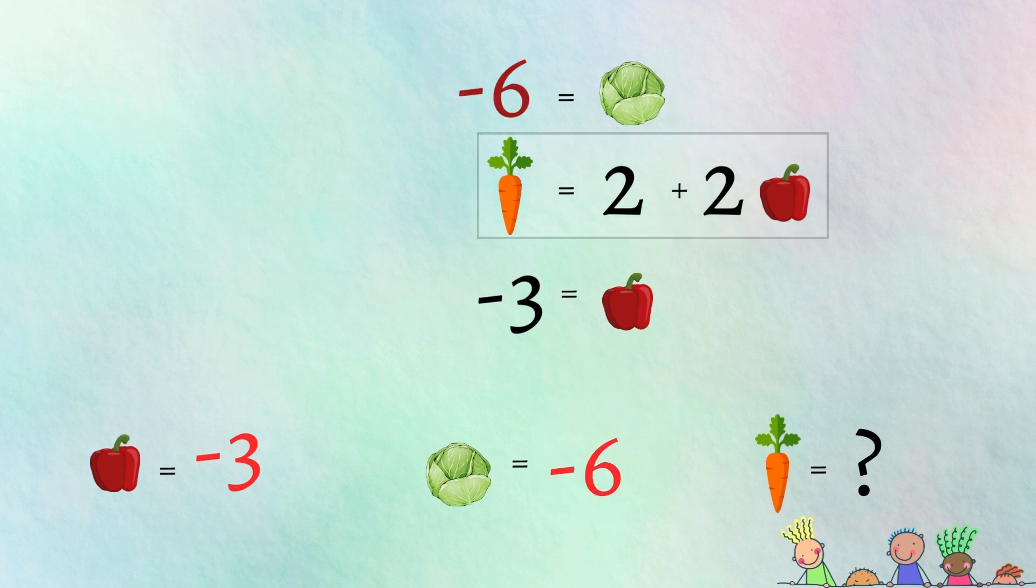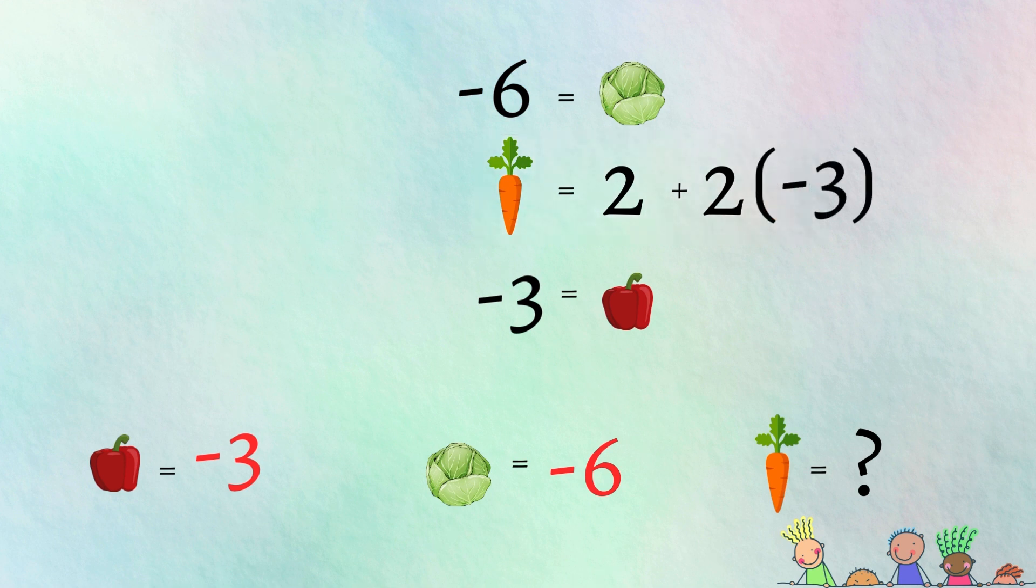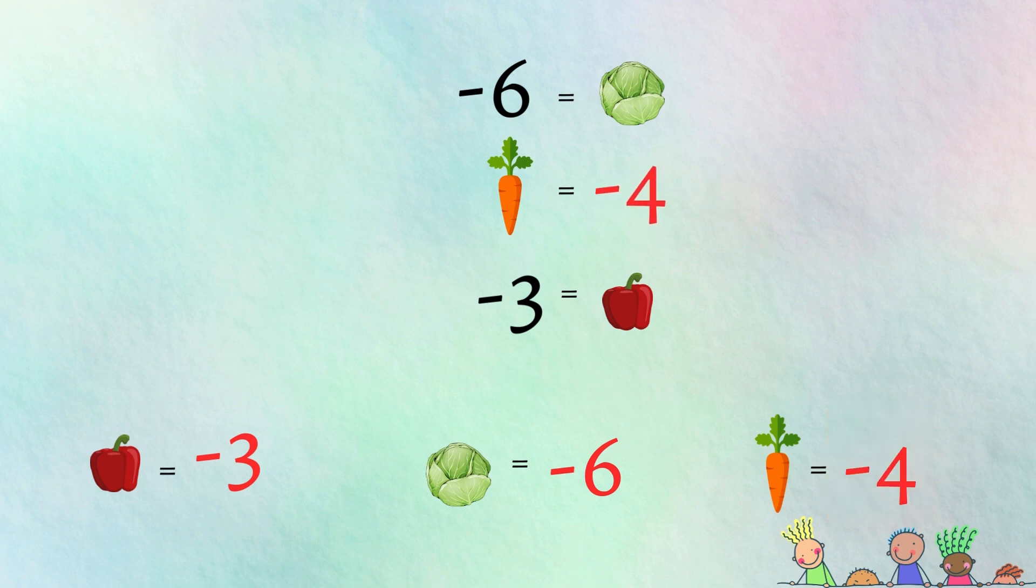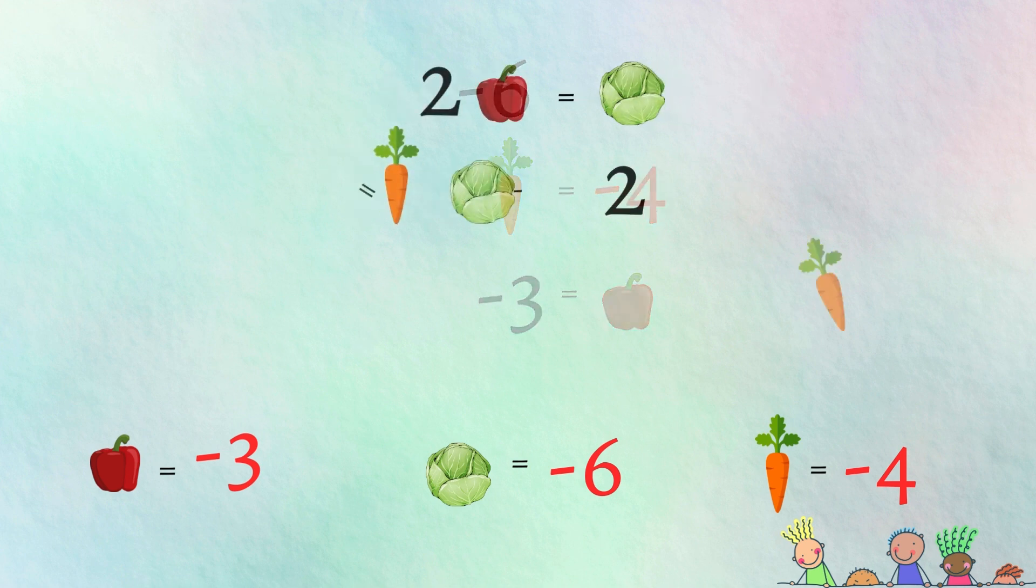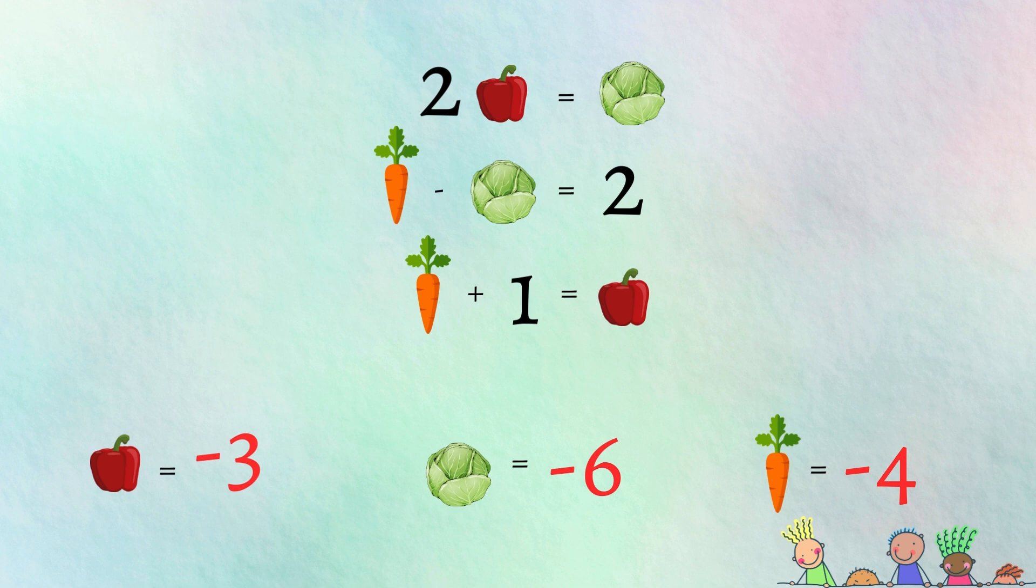And finally the carrot. Two plus two times negative three, that's two minus six which is negative four. So the carrot is equal to negative four. As always, if you want to double check our work, feel free to pause the video and plug in our newfound numbers in lieu of the vegetables. Does everything work out correctly?